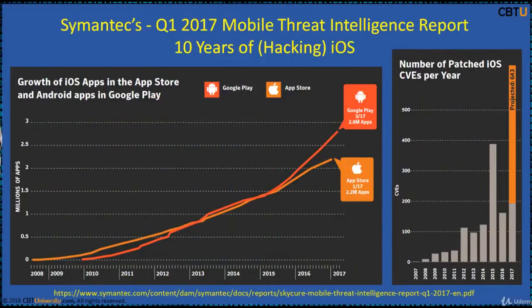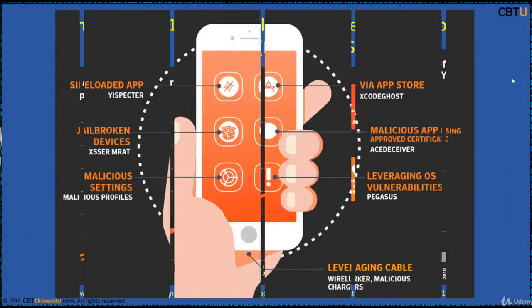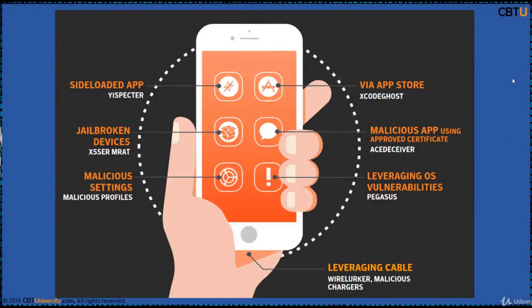This is the Symantec mobile threat intelligence report — 10 years of iOS — showing number of patch diversities per year, increasing year by year. In 2017, there is projected to be 643. Vulnerabilities grow with the technology and focus. Vulnerabilities are uncovered and patched regularly. Apple patches each vulnerability and announces it publicly so that everyone knows the flaws in past versions of the operating system and gives them the opportunity to upgrade their device to the newer and safer versions.